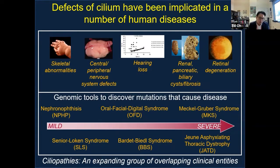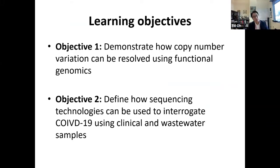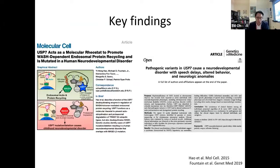While I was an assistant professor at Duke University, we examined how ciliary proteins could interact with other proteins giving rise to neurodevelopmental diseases and identified a host of other proteins. Over the next 20 minutes, I'd like to share two main learning objectives: first, how CNVs or copy number variations can be resolved using sequencing and functional genomic tools; and second, how we've used these tools to interrogate COVID-19 using clinical and wastewater samples.